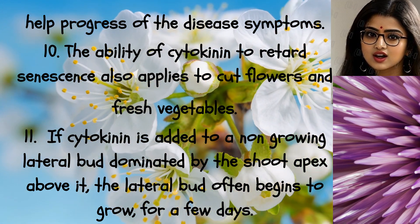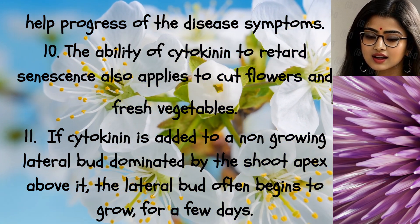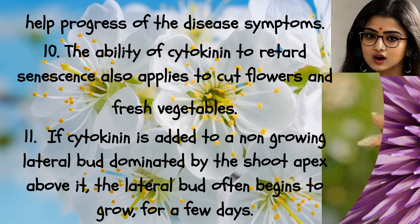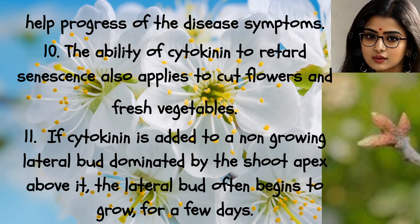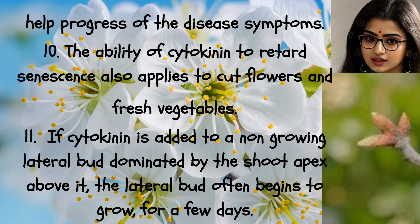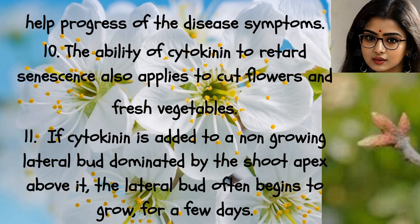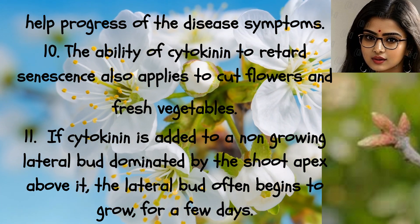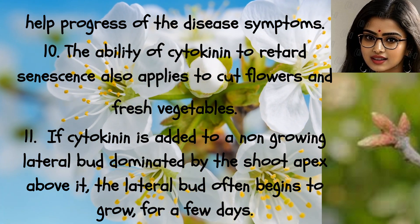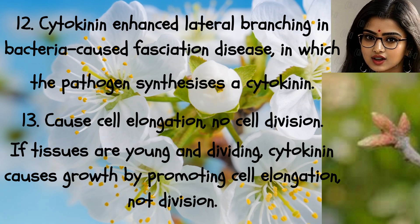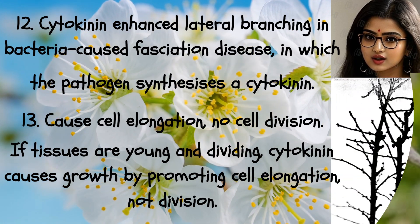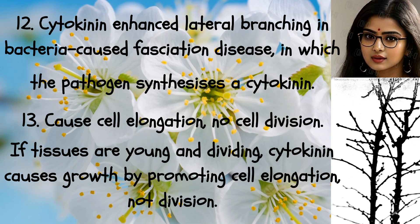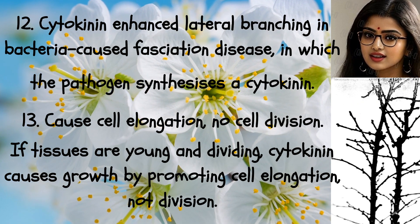Ten: the ability of cytokinin to retard senescence also applies to cut flowers and fresh vegetables. Eleven: if cytokinin is added to a non-growing lateral bud dominated by the shoot apex above it, the lateral bud often begins to grow for a few days. Twelve: cytokinin enhances lateral branching — in bacteria, it causes fasciation disease, in which the pathogen synthesizes a cytokinin.